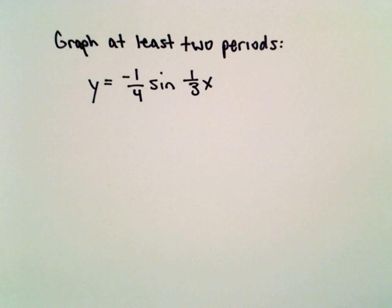Okay, here we're going to graph two periods of y equals negative one-fourth times sine of one-third x.